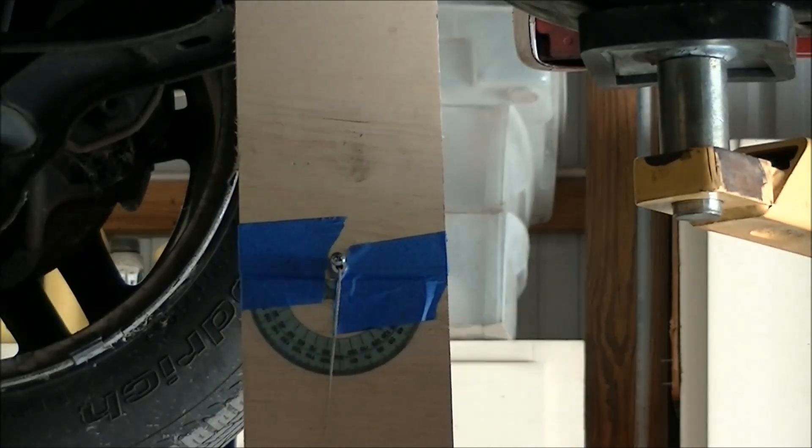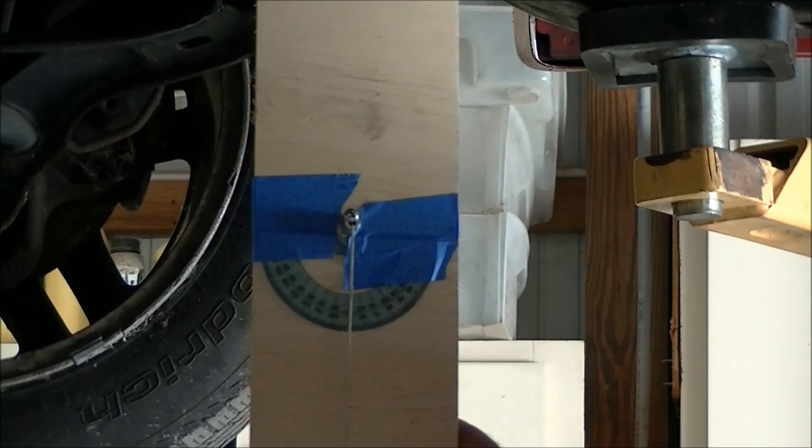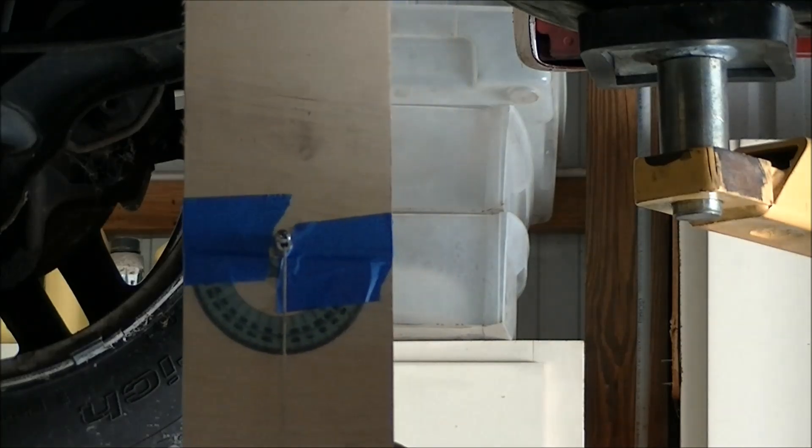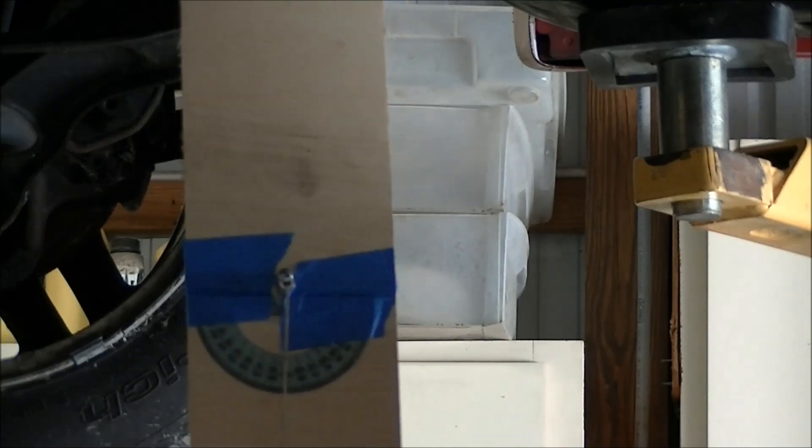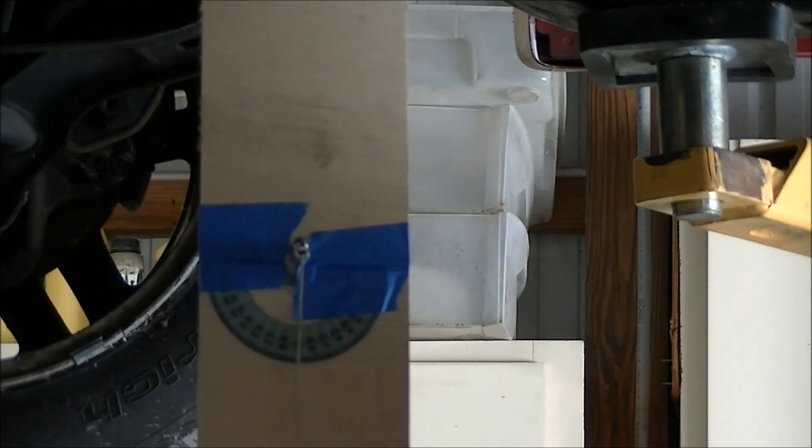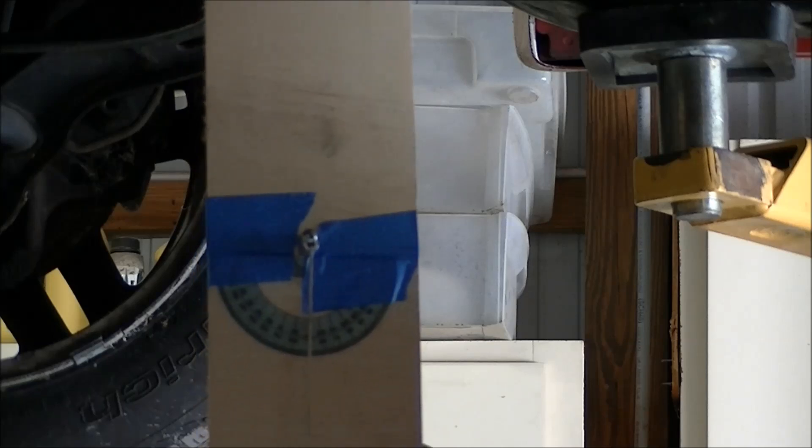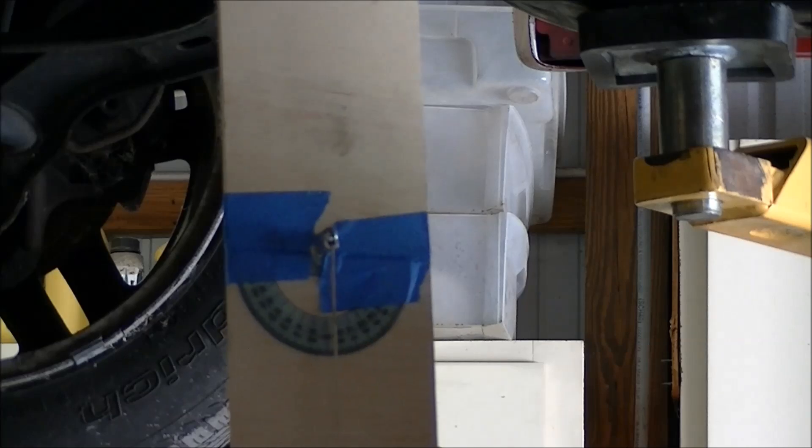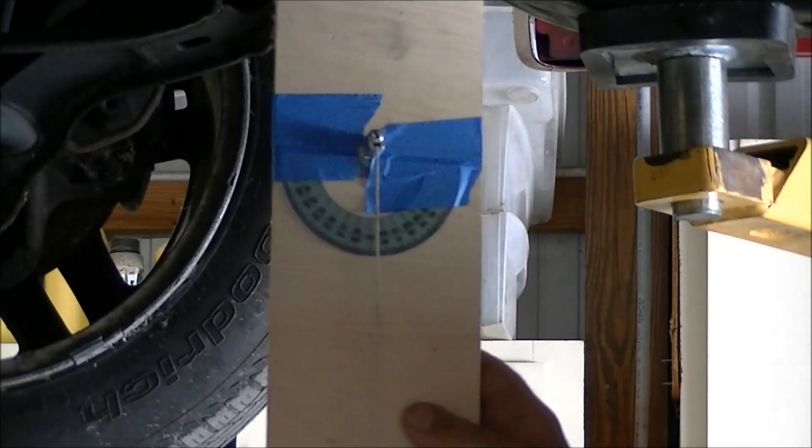What I've made here is just a little driveline angle tool, basically it's a plumb bob with a protractor on it. You can buy these magnetic driveline measurement tools or you can buy just an angle gauge from Harbor Freight or wherever. I happen to like this better because it relies solely on gravity.